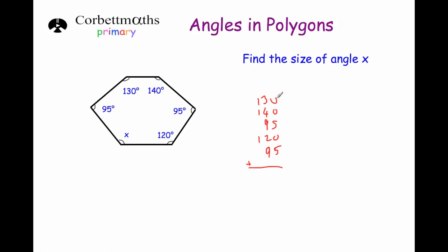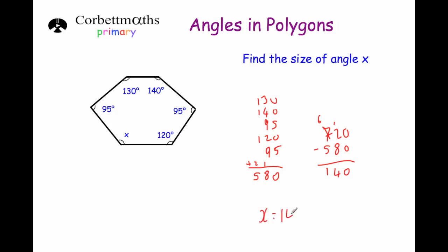Adding up the numbers: the five angles have a sum of 580 degrees. Now if we take 580 away from 720 — which is what the angles add up to in a hexagon — we're going to find the missing angle x. So 720 minus 580 gives us 140 degrees. So x is equal to 140 degrees.